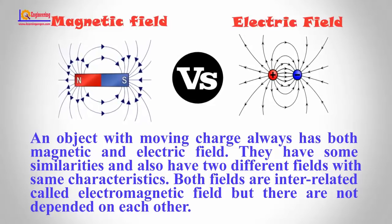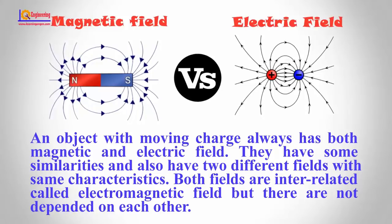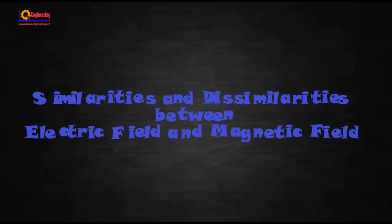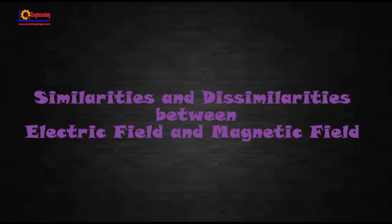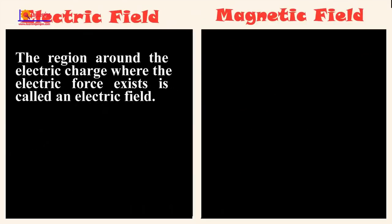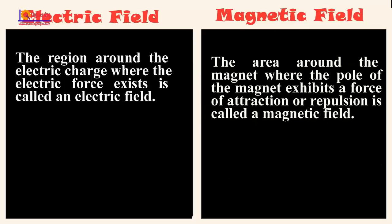They have some similarities and also have two different fields with the same characteristics. Both fields are interrelated, called the electromagnetic field, but they are not dependent on each other. In this video, I will show you similarities and dissimilarities between electric field and magnetic field. The region around the electric charge where the electric force exists is called an electric field, whereas the area around the magnet where the pole of the magnet exhibits a force of attraction or repulsion is called a magnetic field.